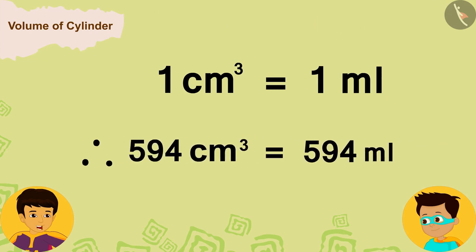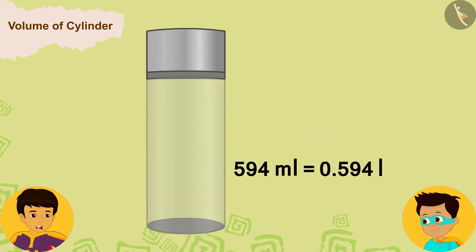And Thomas, we know that one cubic centimeter is equal to one milliliter. That is, 594 cubic centimeters will be equal to 594 milliliters.